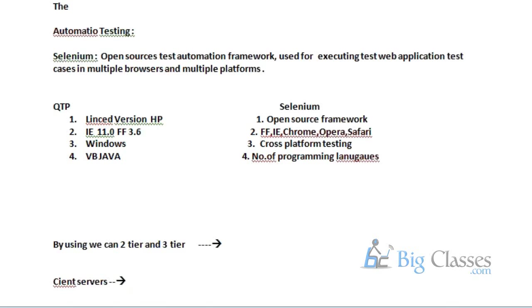But if you are looking at web applications, you can access them anywhere in the world, anywhere on the globe. So intranet-accessible applications — you consider those two-tier. Intranet is nothing but two-tier.